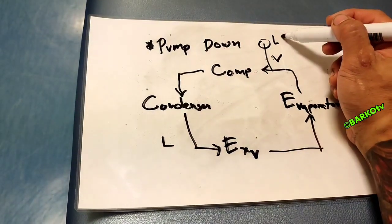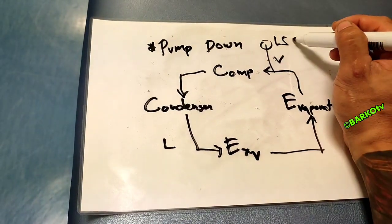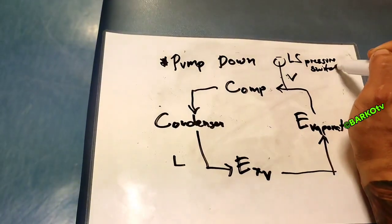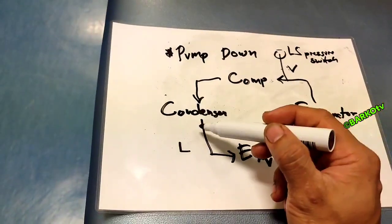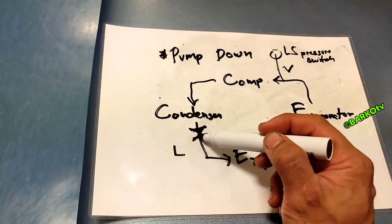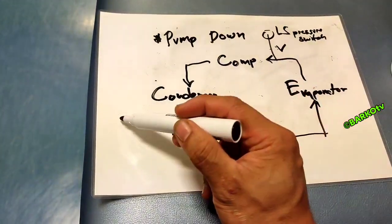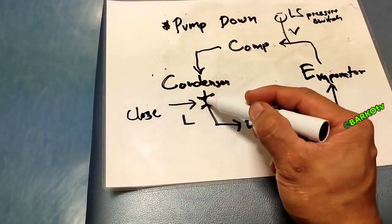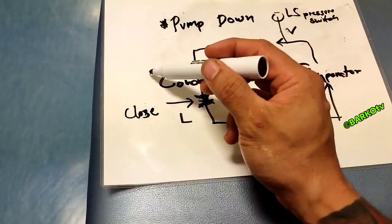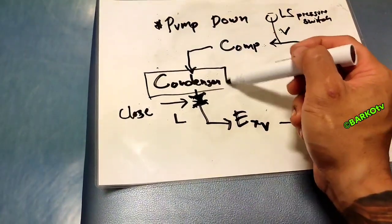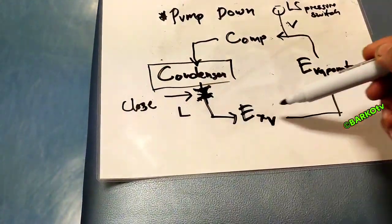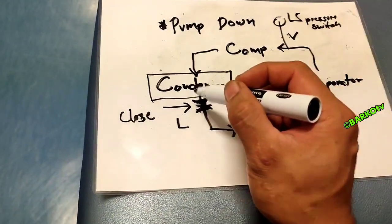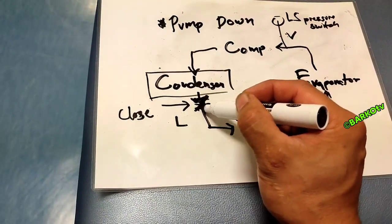On your suction side there is a low pressure switch — it acts as a monitor on your compressor side. There is also an isolation valve on your condenser. After the condenser, you need to close that valve. That is the technique for manual pumping down. If you close that valve, almost all your refrigerant in your system is collected and goes to the condenser.